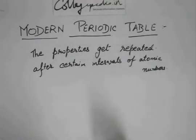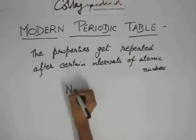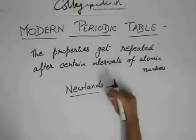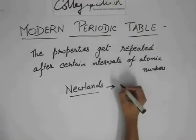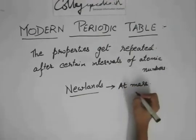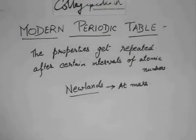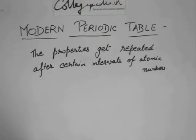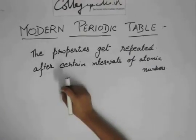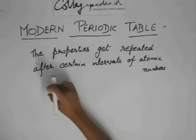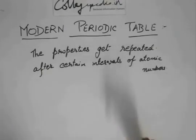One mistake I had made is that Newlands, what he proposed was that he arranged the atoms or elements in increasing order of their atomic mass and not number. I had said number, so sorry for that. But the modern periodic law is very confident that the properties get repeated or the properties are a function of atomic numbers. So the periodic table, the elements need to be arranged in such a way that they are in increasing atomic numbers and not increasing atomic masses.